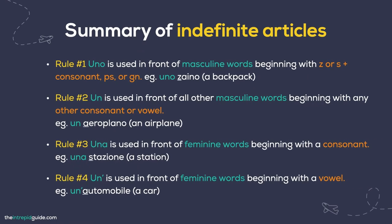Here is a summary of indefinite articles — four rules. Rule 1: 'Uno' is used before masculine words beginning with z, s plus a consonant, ps, or gn — e.g., 'uno zaino' (a backpack). Rule 2: 'Un' is used before all other masculine words beginning with any other consonant or vowel — e.g., 'un aeroplano' (an aeroplane). Rule 3: 'Una' is used before feminine words beginning with a consonant — e.g., 'una stazione' (a station). Rule 4: 'Un'' with an apostrophe is used before feminine words beginning with a vowel — e.g., 'un'automobile' (a car). As you encounter new words, you will be able to recognize and remember these rules.